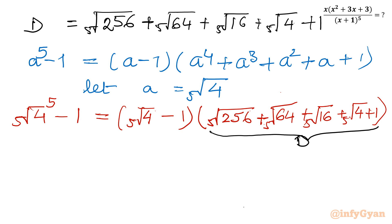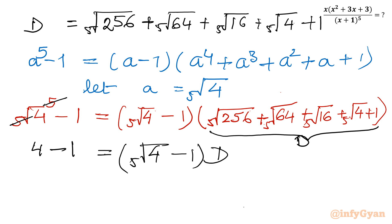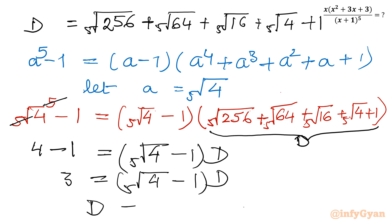So the 5th root and power 5 cancel, leaving 4 - 1 on the left, which equals (5th root of 4 - 1) times d. The left-hand side is 3, so from here we get d equals 3 over (5th root of 4 - 1).